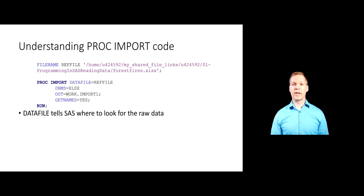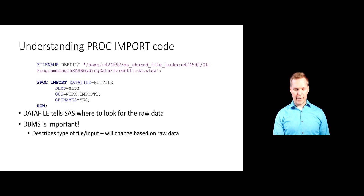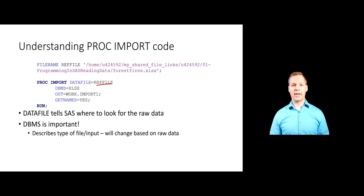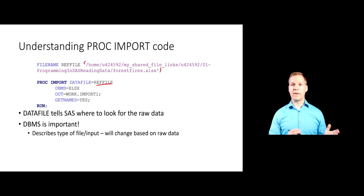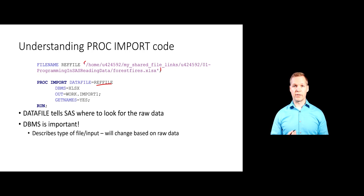Let's go through the PROC IMPORT code in detail so we understand all the pieces. The DATAFILE option at the top tells SAS where to find the file — where is my raw data located, given by the quoted string. DBMS is very important — this tells SAS what type of raw data you're dealing with. DBMS stands for database management system, and it will change based on whether your data is comma delimited, tab delimited, or generically delimited. The OUT option on the PROC IMPORT statement tells SAS where to save the SAS data set being created.